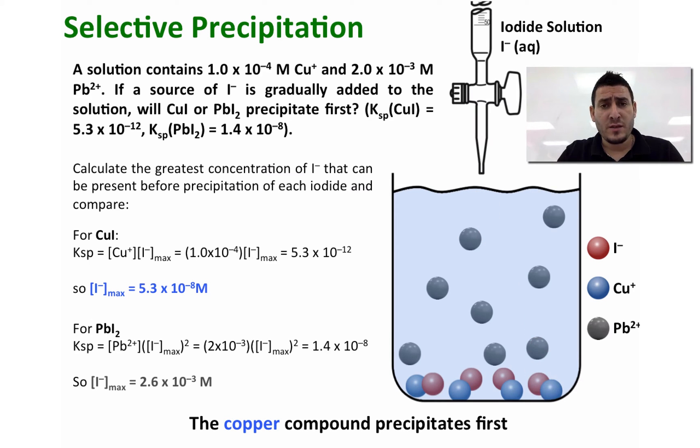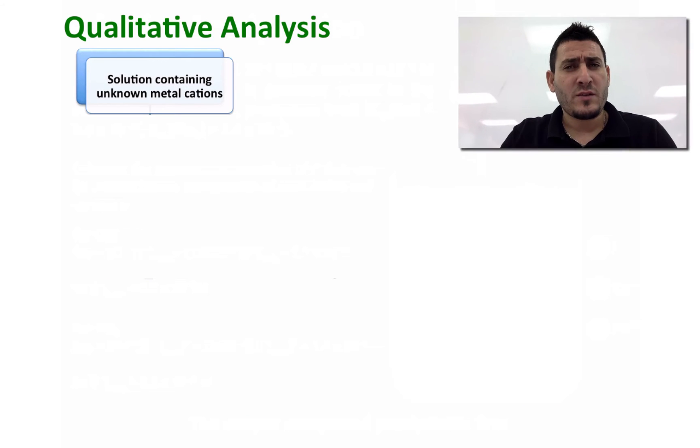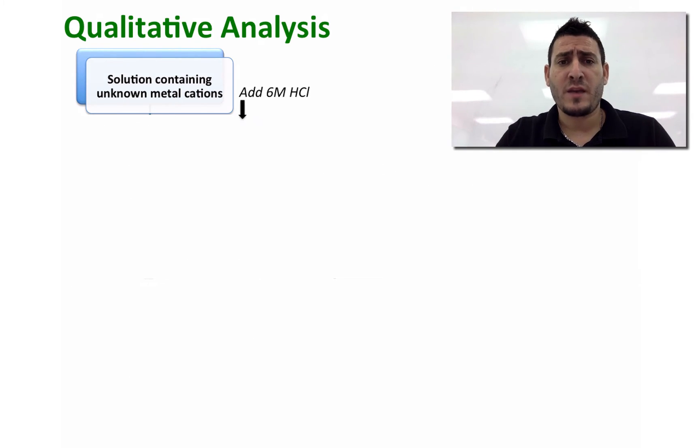Once we precipitate all the copper, then if we keep adding I minus, the lead will start to precipitate. This is called selective precipitation. How could this be useful? We can understand this point more from the qualitative analysis point of view. Assuming I have a solution that contains many ions and I want to separate these ions, I can first proceed by adding HCl.